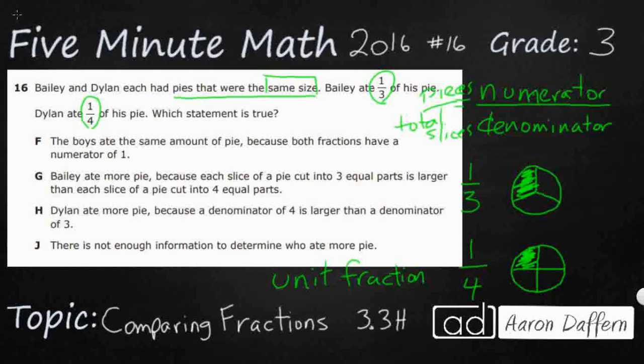But I do not believe they ate the same amount of pie. Both fractions have a numerator of one, but if you take a look, Dylan's pie is split up into four pieces and Bailey's pie is split up into three pieces. To me, it looks like they're different sizes. Bailey might be a little bit bigger because he's got a little bit more area here. So I'm going to say this is incorrect. I don't think they're the same amount.